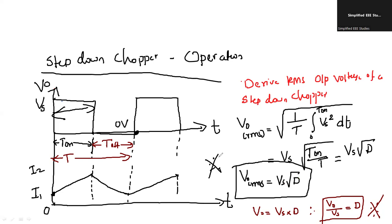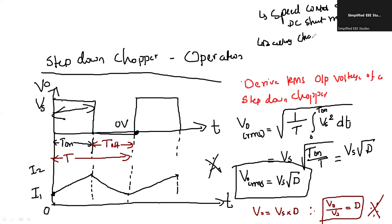This is the derivation for RMS output voltage of step-down chopper. I have already prepared typed notes for the buck converter which I can share. Various applications include speed control of DC motor (DC shunt motor), battery charger, solar street light, and electrolysis — these are the various practical applications of the step-down chopper.